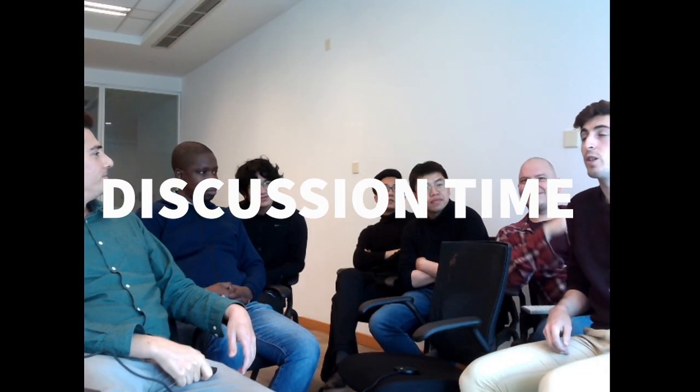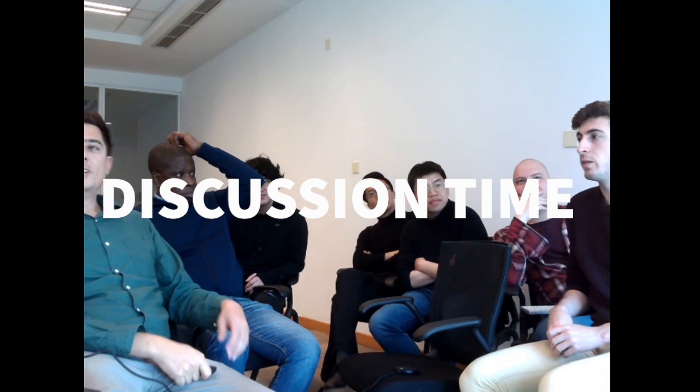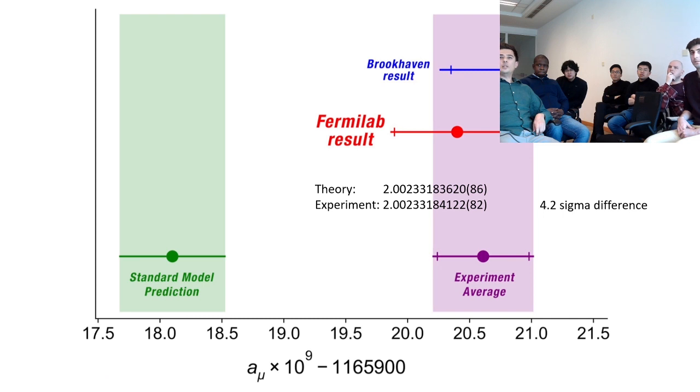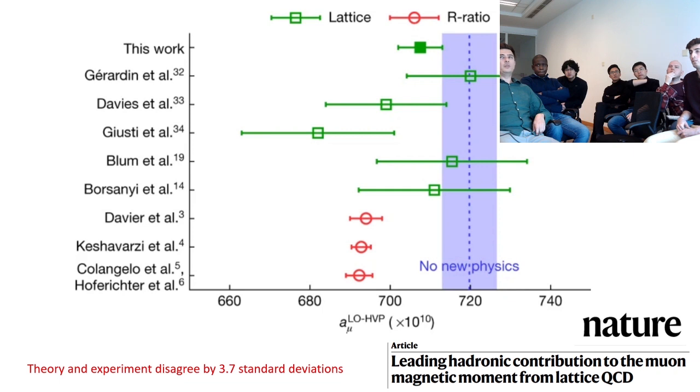So even with the new Nature paper that still doesn't rule out the possibility that it's different. They in the paper say 3.7 standard deviations. And actually I don't know the difference of all these approaches to what was planned over here. So this is the Fermilab announcement and they said 4.2 sigma.